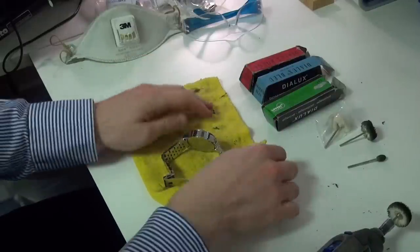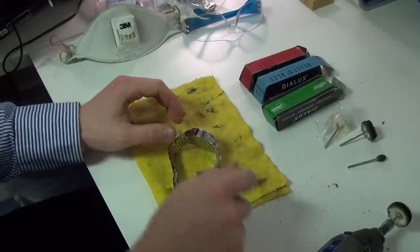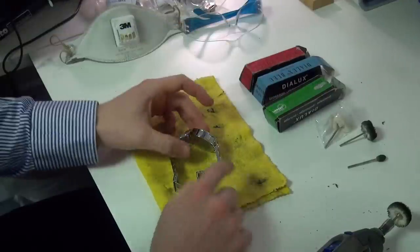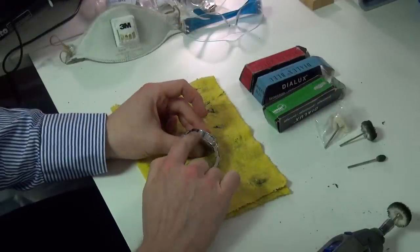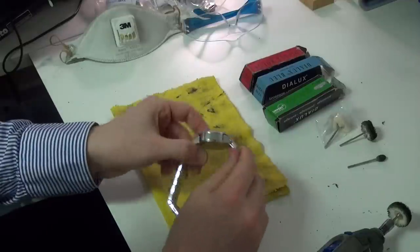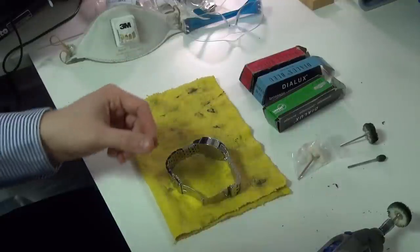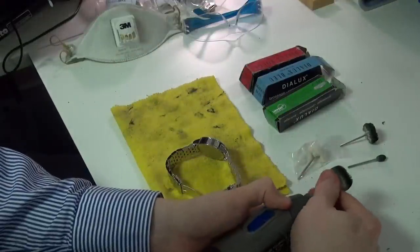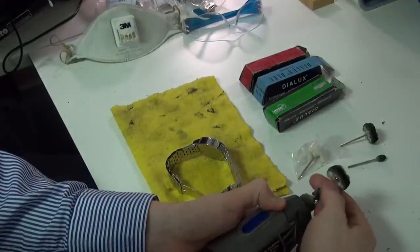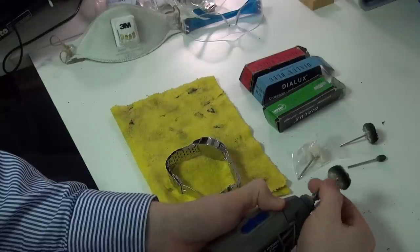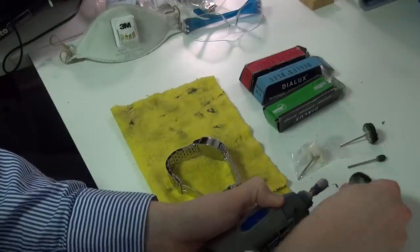The only thing that can happen if you need to use quite a lot of compound is it can leave like a clouding effect on the watch. In those circumstances what I would suggest you do is to take one of the heads off and use a fresh one.